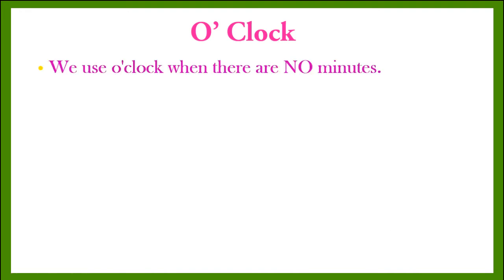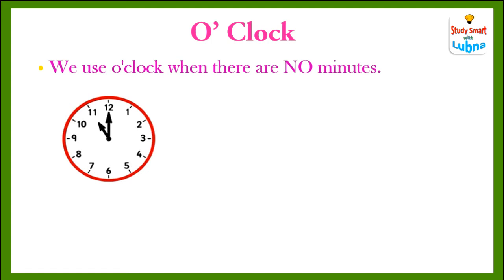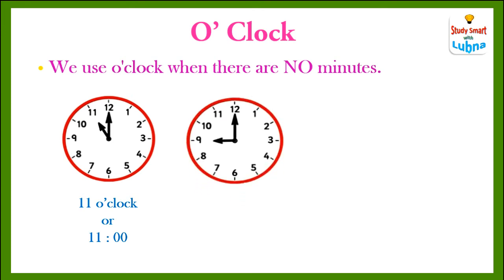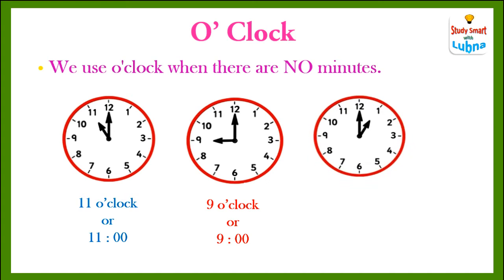O'clock: we use o'clock when there are no minutes. Here you can see that the big hand is pointed towards 12 and the small hand is pointed towards 11. So what time is it? It's 11 o'clock, or 11. Look at the second analog clock — it's 9 o'clock, or 9. Look at the third analog clock — it is 1 o'clock, or 1.